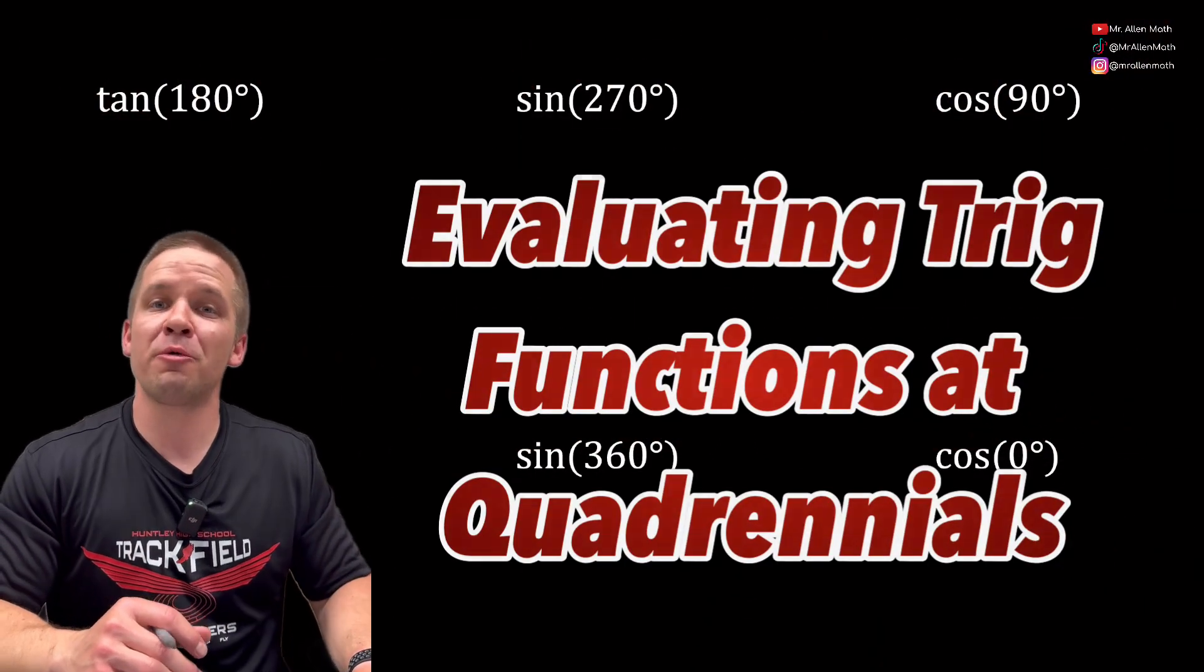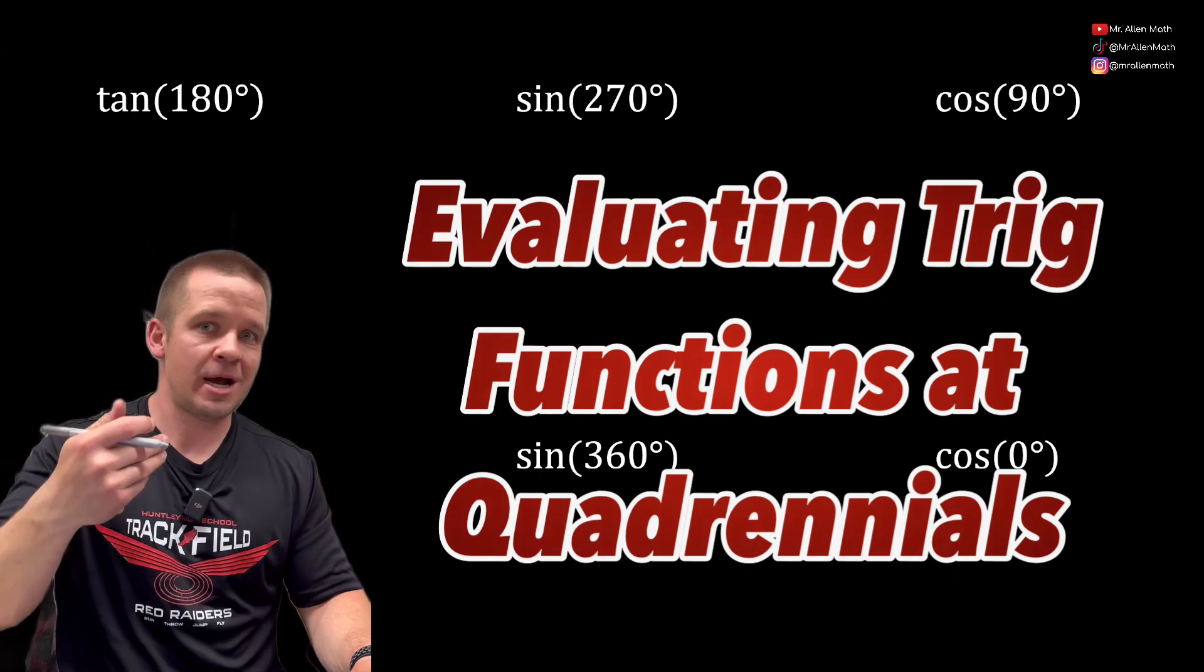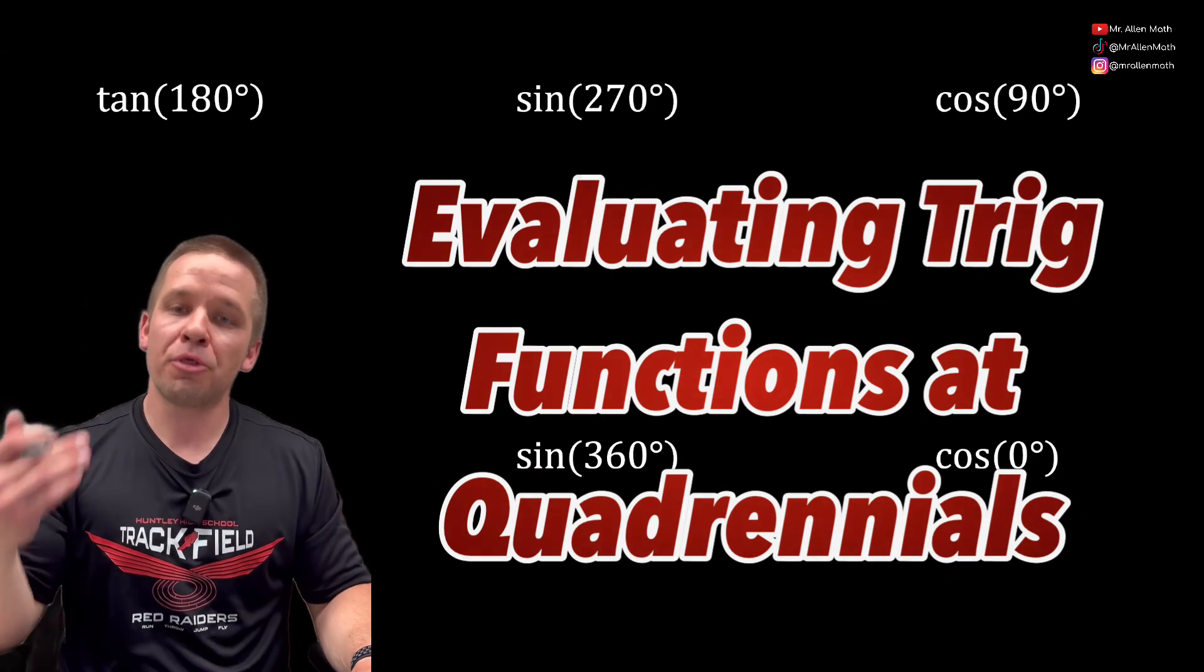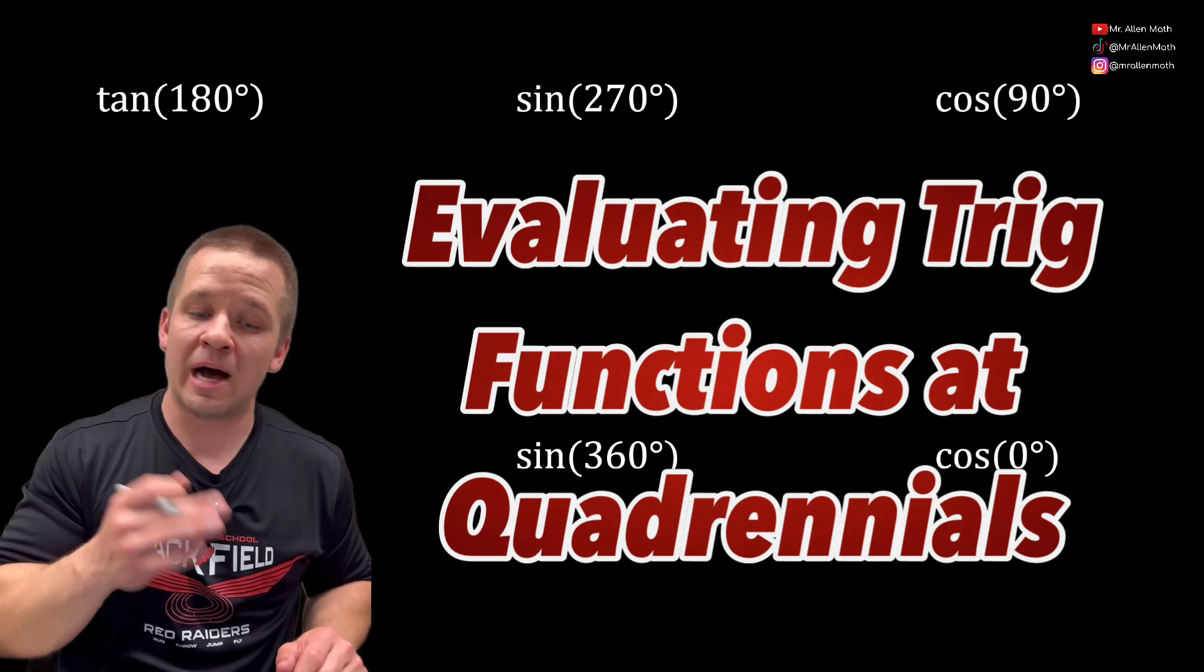What's poppin' dogs, Mr. Allen here evaluating some trig functions at quadrantal angles. So at zero, 90, 180, 270, 360 degrees. We won't be drawing any triangles here, we're just gonna use those quadrantal values of our unit circle.